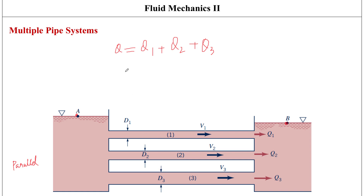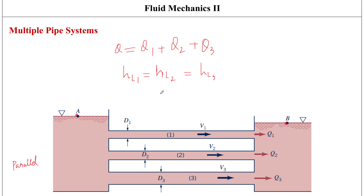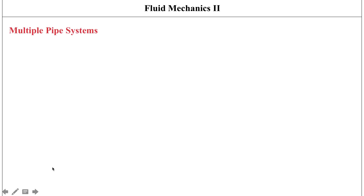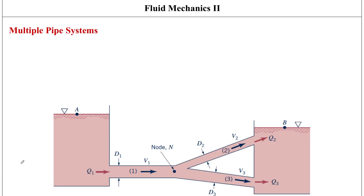That is the flow rate relationship for a parallel piping system. The head loss across each of these pipes is equal to each other, so head loss across pipe one equals head loss across pipe two equals head loss across pipe three. These are the two governing equations. It depends on what is known and what is unknown to determine the type of problem and which scheme to apply — whether iterative or a simpler direct approach.